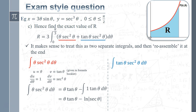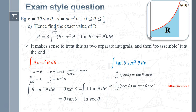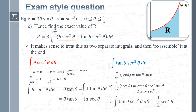Now integrate tan θ·sec²θ. This can be done by inspection: differentiating sec²θ using the chain rule brings the power to the front — 2·secθ·(tanθ·secθ) = 2tanθ·sec²θ. So the derivative of sec²θ is 2tanθ·sec²θ, meaning the integral of tanθ·sec²θ is (1/2)sec²θ. That's a non-obvious result but that's how you identify it.